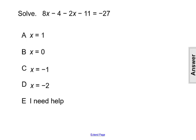Solve the equation 8x minus 4 minus 2x minus 11 equals negative 27. When you're asked to solve an equation, the goal is to get the variable completely isolated or alone on one side of the equal sign.